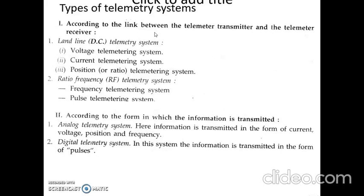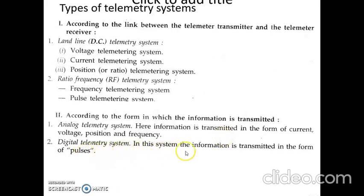The landline telemetry system is most suitable for short distance telemetry. In the radio frequency telemetry system, there is no physical link between the telemetry transmitter and receiver — the link is established through a radio link. According to the form in which information is transmitted, the telemetry system is classified into two types: analog telemetry system and digital telemetry system. In the analog telemetry system, information is transmitted as analog signals like current, voltage, position, and frequency, while in the digital telemetry system, information is transmitted in the form of pulses, which are digital signals.